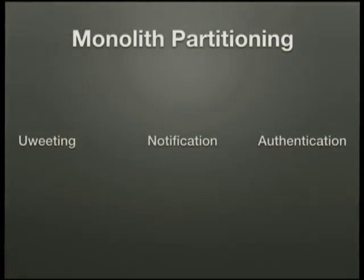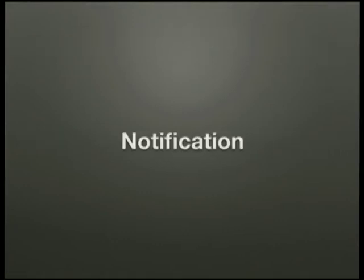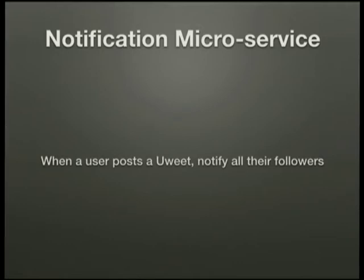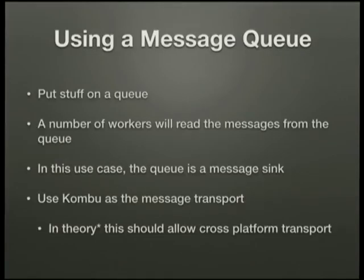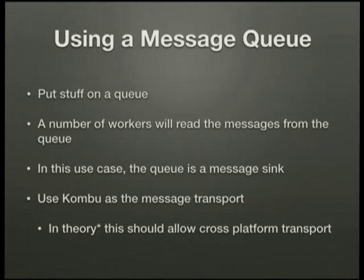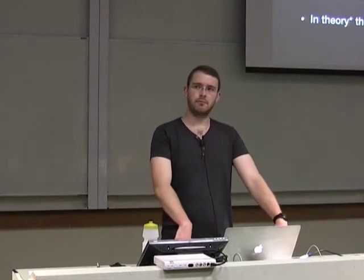So the next partition we're going to look at is the notification service. The one-sentence definition is: when a user posts a ueet, we need to notify all their followers. I'm going to do this using a message queue. Message queues are simple — you put stuff on a queue and then you have a number of workers who will read messages from the queue. In this use case, the queue is a message sink: a message goes in and disappears and the front end can forget about it.